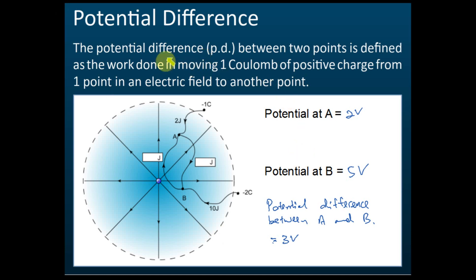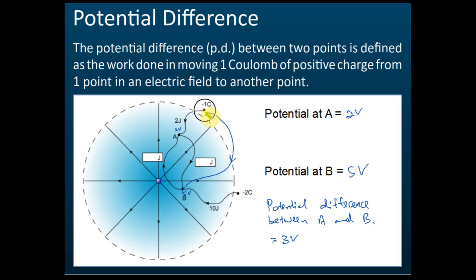The potential difference between two points is defined as the work done to move one coulomb of positive charge from one point to another. Point B has a potential of 5 volts and point A has 2 volts. If you move one coulomb of charge from infinity to point A, you do 2 joules of work. If you move it to point B, Cindy says 5 joules — yes, correct! Because 5 volts means you must do 5 joules of work to move one coulomb of charge.